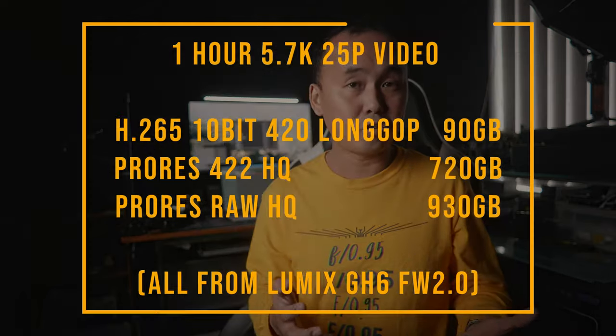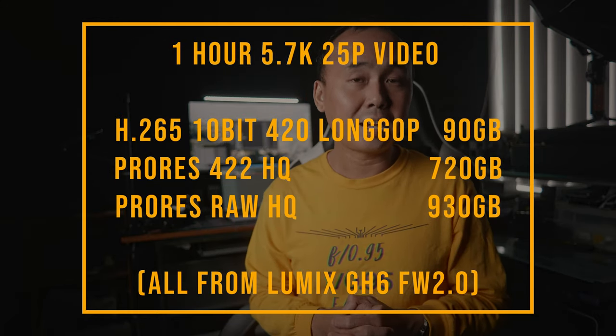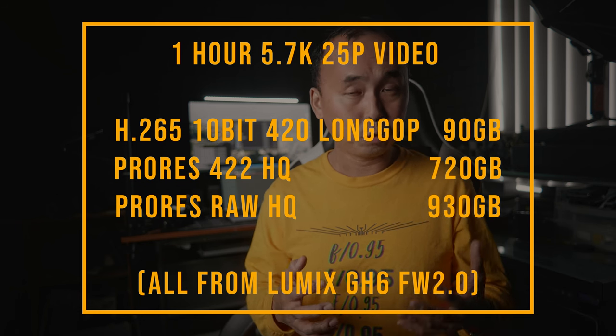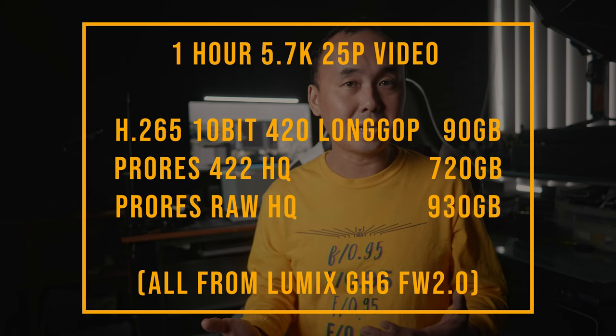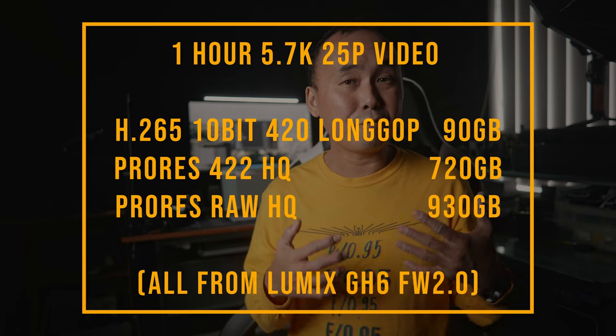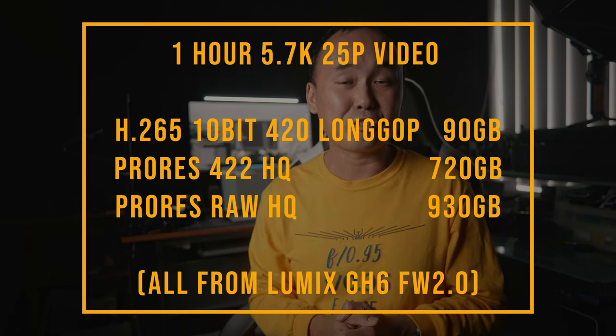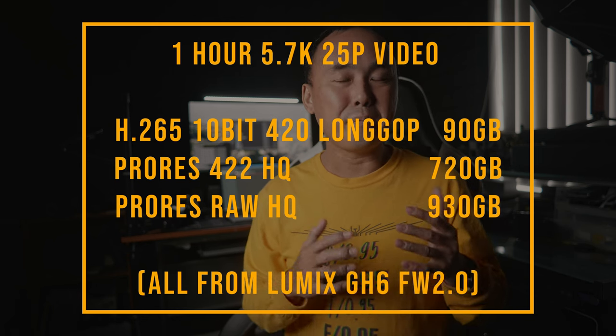H.265 was developed primarily to compress files as much as possible so they are suitable for content delivery, meaning these files require a lot more processing power to decode. ProRes 422 and ProRes RAW have a much bigger focus on editing performance, so they are not compressed as much. An hour of 5.7K 25fps video in H.265 10-bit 4:2:0 Long GOP from the GH6 is approximately 90 GB. In comparison, an hour of ProRes 422 HQ at the same resolution and frame rate is about 720 GB — about eight times bigger. An hour of ProRes RAW HQ is 930 GB — about ten times bigger than the H.265 file.